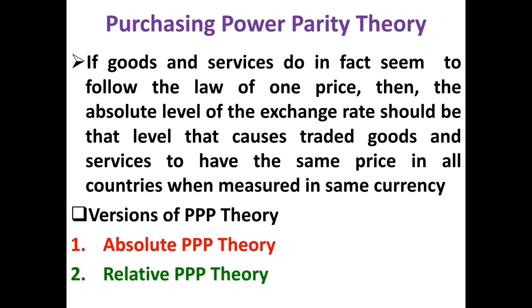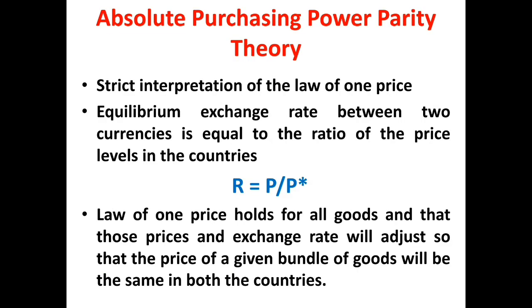The purchasing power parity theory comes in two forms: one based on a strict interpretation of the law of one price, known as the absolute purchasing power parity theory, and the other, a weaker variation, known as the relative purchasing power parity theory. We will begin by examining the nature of the absolute purchasing power parity theory.